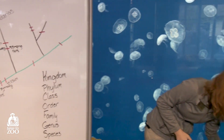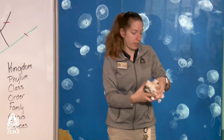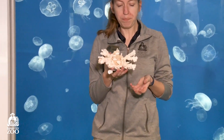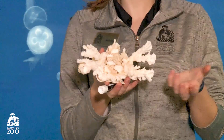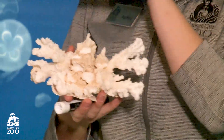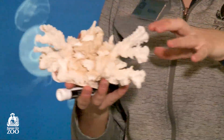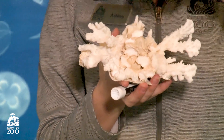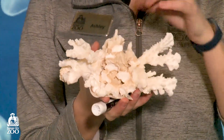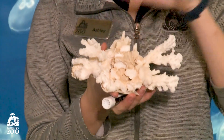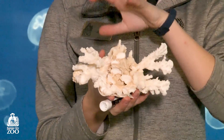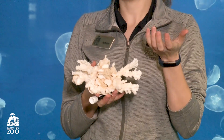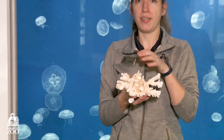The other group within cnidaria is corals. This is an example of a coral taken from the ocean. The structure itself is not radial symmetry, but a coral is actually a bunch of different individual coral animals together, and together they create that structure. If we were to break it down into individual animals, they would still experience radial symmetry.